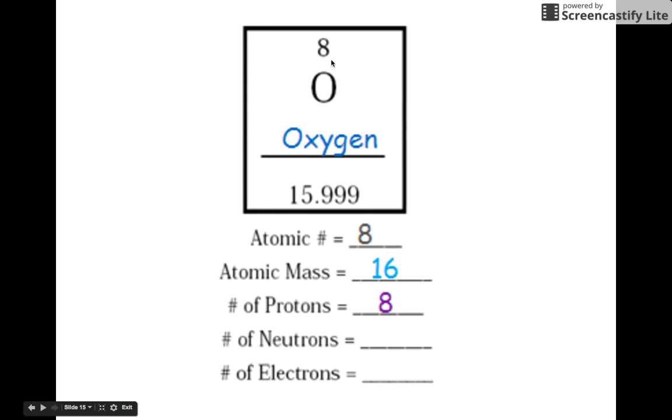So, oxygen. Oxygen. We have atomic number of 8, atomic mass of 16, because it's 15.999. 9 is higher than 5, so we round it up to 16.